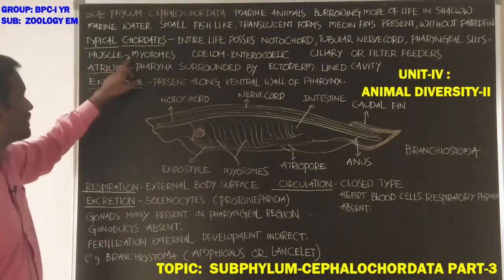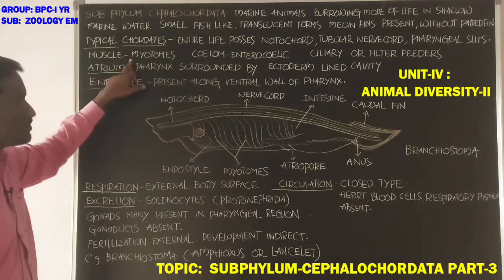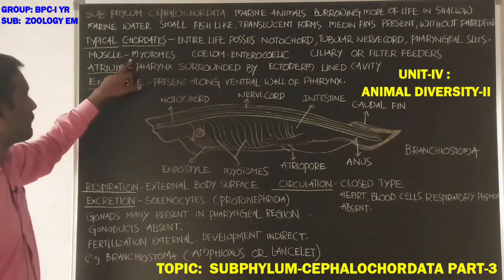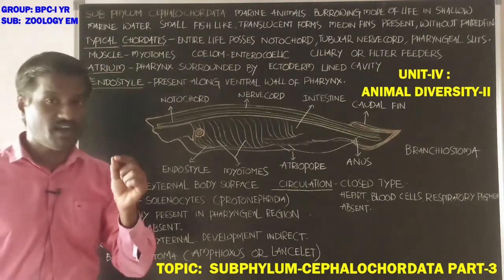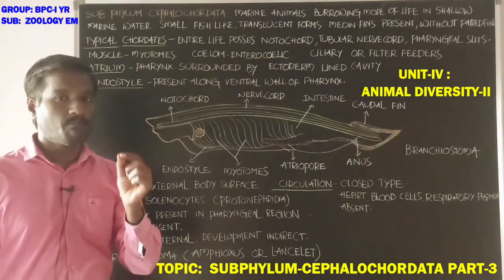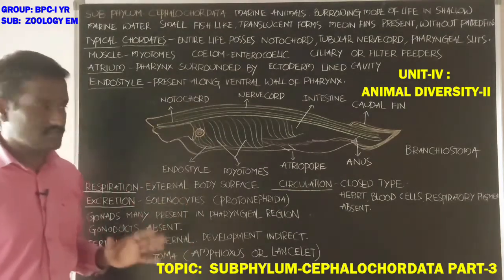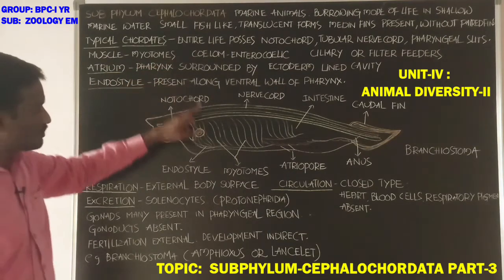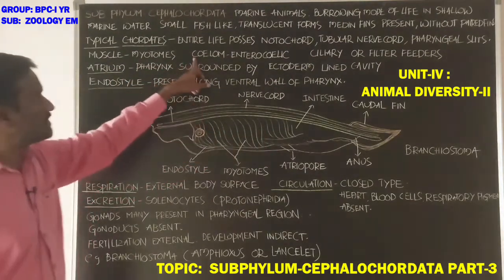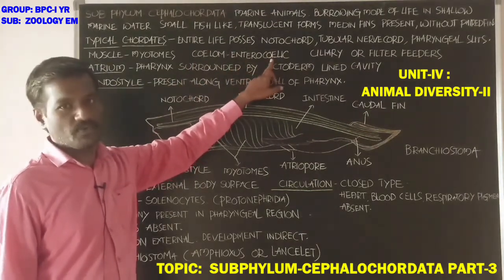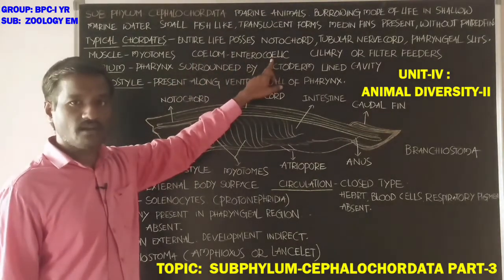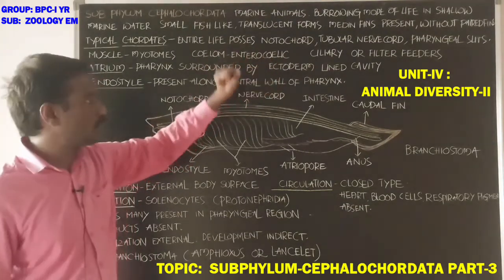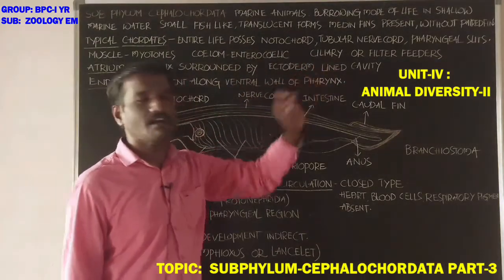Muscles occur as myotomes, which are muscle blocks. The coelom is enterocoelic, formed by archenteron pouches. These animals are ciliary or filter feeders.